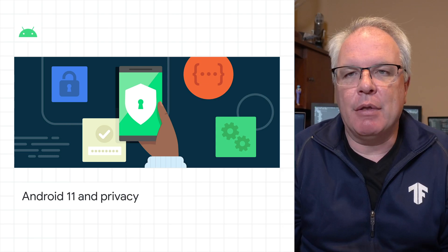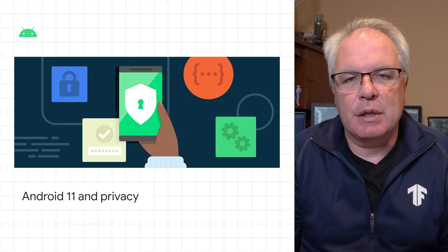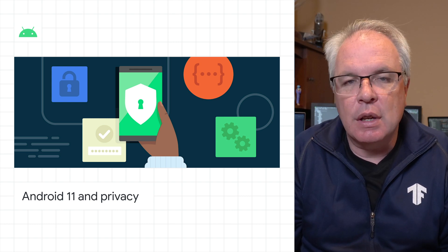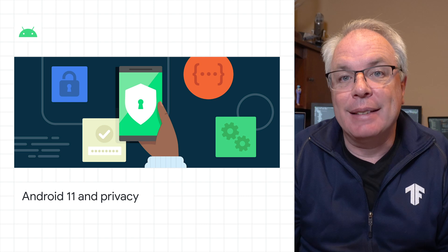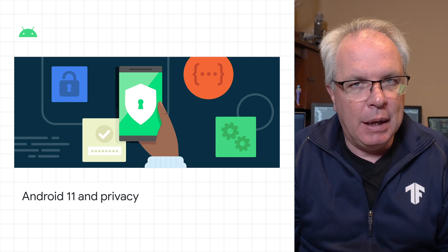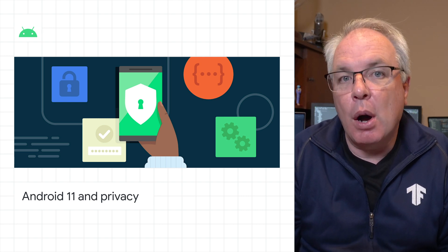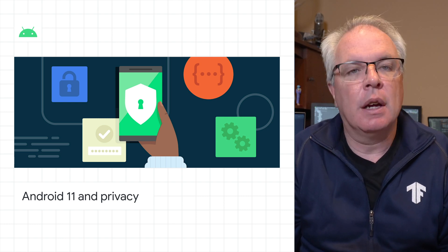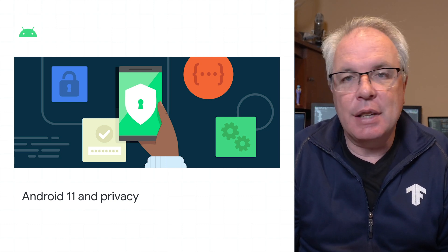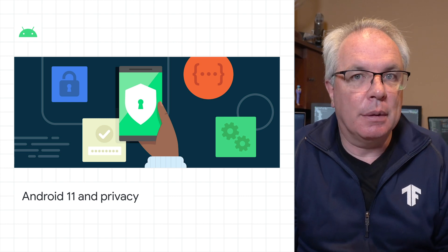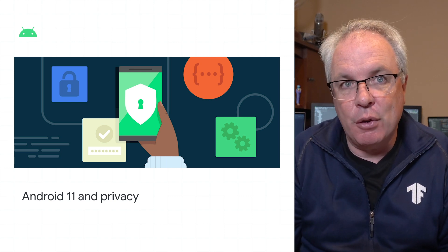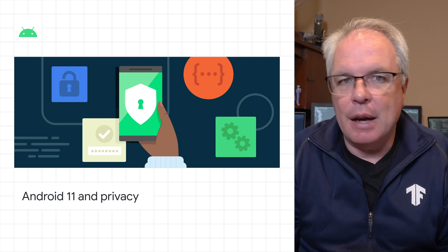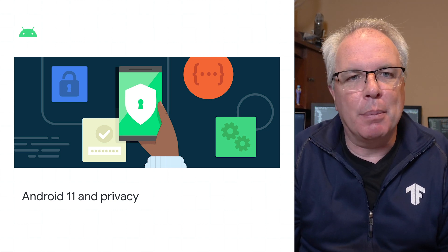With the release of Android 11, there's lots of improvements in privacy. There's even better control and transparency for users, as well as APIs that will help your apps handle data responsibly. Many of the improvements will reinforce modern best practices. The blog post covers four of these, including handling content URI sharing, incremental permission requests, accessing sensitive data in the foreground, and using resettable parameters. Go check it out at the link in the description or swipe up on Instagram.